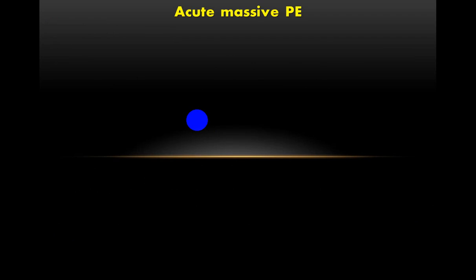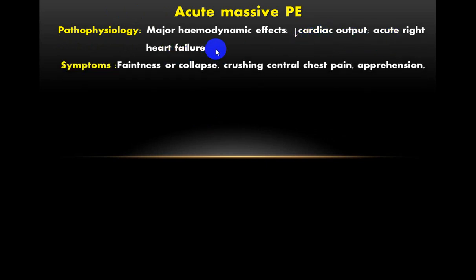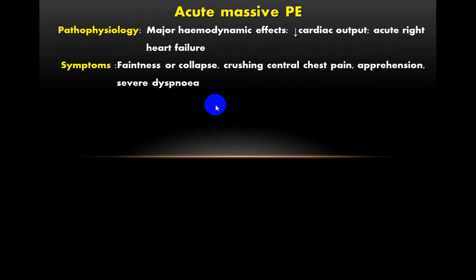The first type is acute massive pulmonary embolism. Physiologically, there are major hemodynamic effects including decreased cardiac output and acute right heart failure. Symptoms include faintness or collapse, crushing central chest pain, apprehension or fear of death, and severe dyspnea.